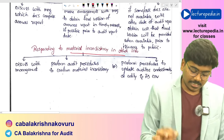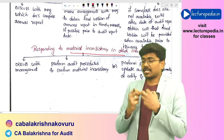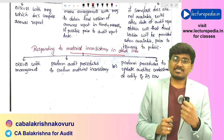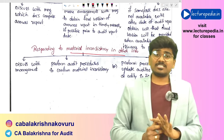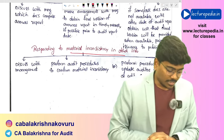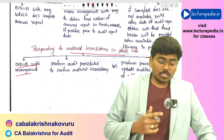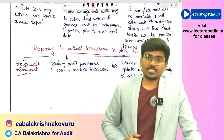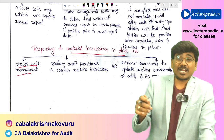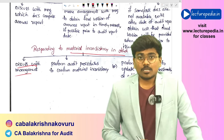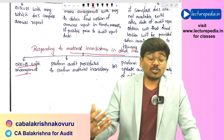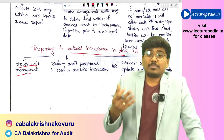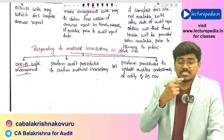After obtaining other information, the auditor checks for material inconsistency between the other information and the financial statements, or between the other information and the auditor's knowledge. If a possible misstatement is found in the other information, the auditor will perform audit procedures to confirm it, or update their knowledge of the entity if the other information is correct.